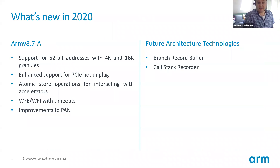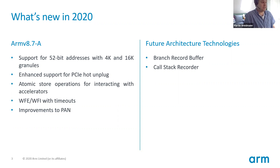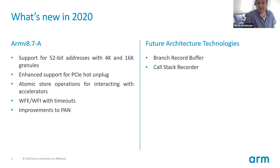So what are we adding this year in 2020? This year's extension is called 8.7. The highlights this year are: expanding support for 52-bit addressing, support for PCI hot unplug, some extra atomic operations, changes to WFI and WFE to add a timeout option, and improvements to PAN — that's Privilege Access Never.